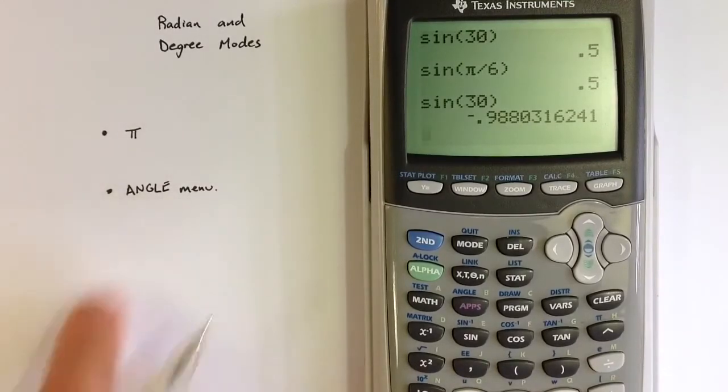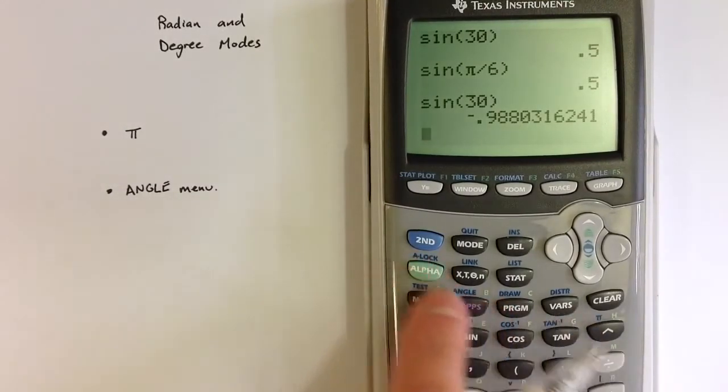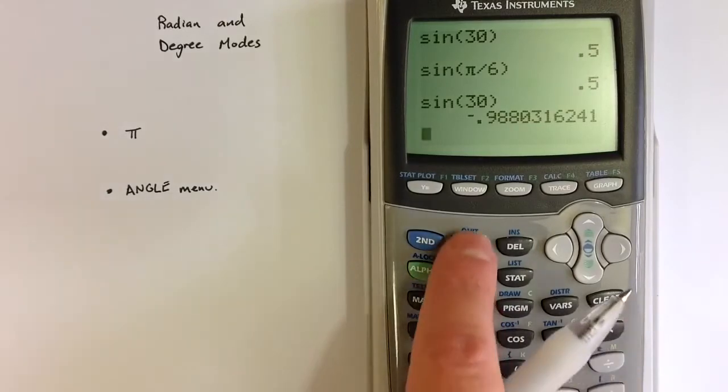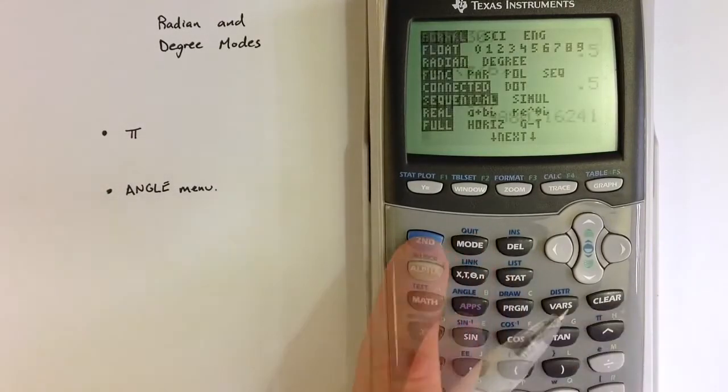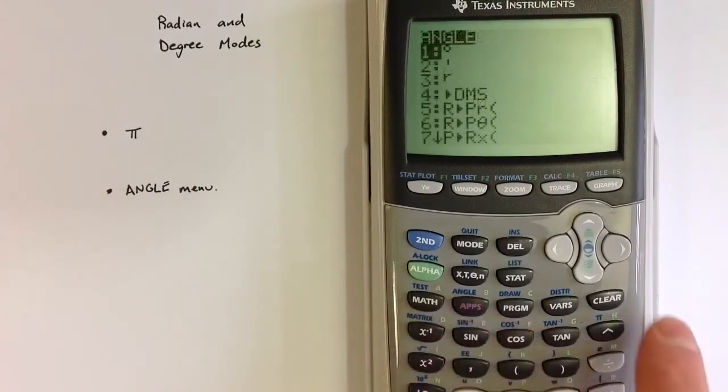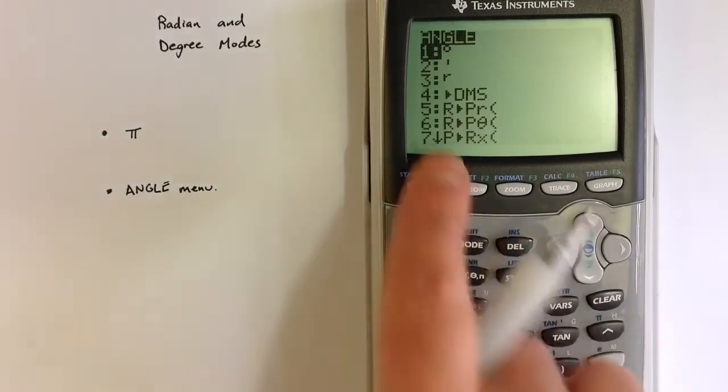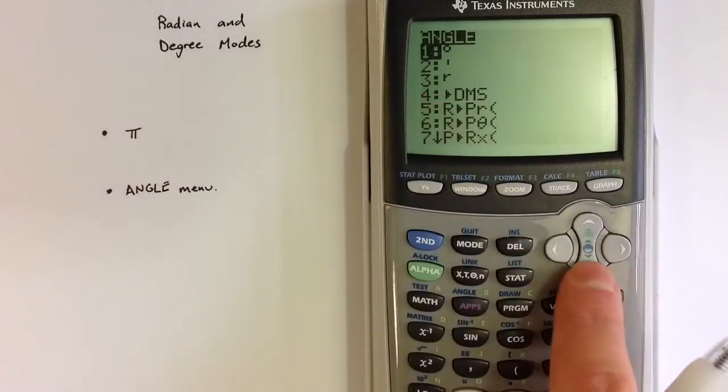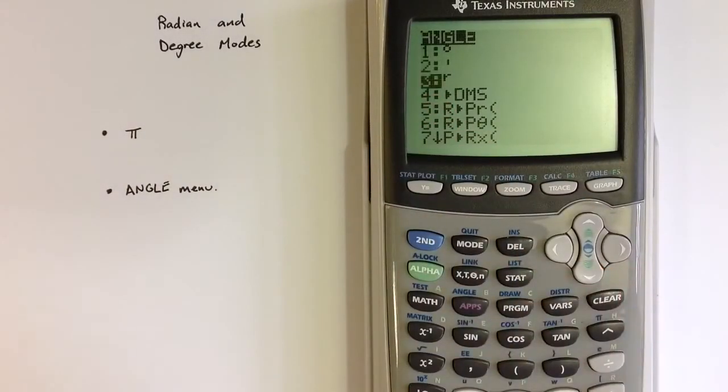One other thing I want to talk about: the angle menu gives us an option. We're currently in radian mode. If I want to stay in that mode but identify something as a degree measure, there is an option in the angle menu. The first option identifies a number in terms of degrees, and the third option identifies something in terms of radians.